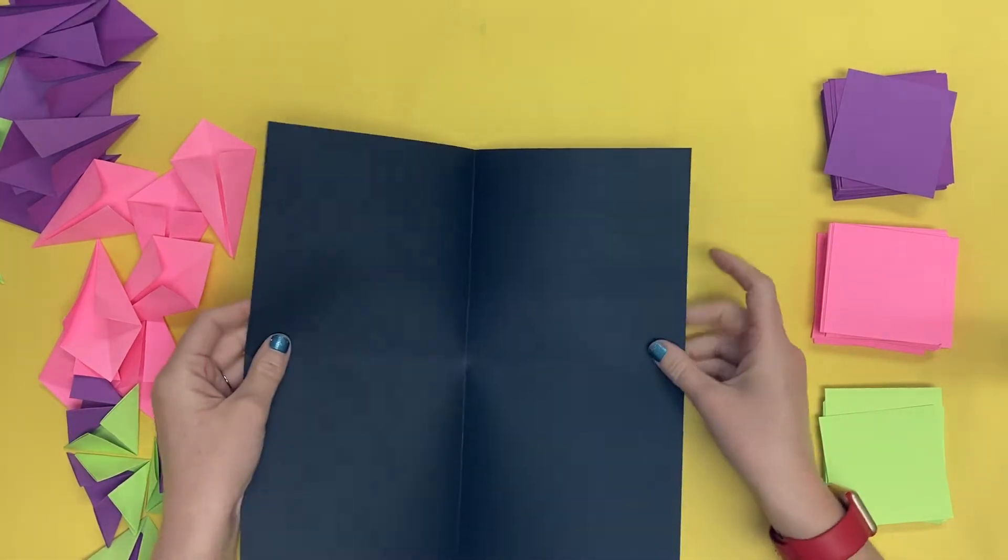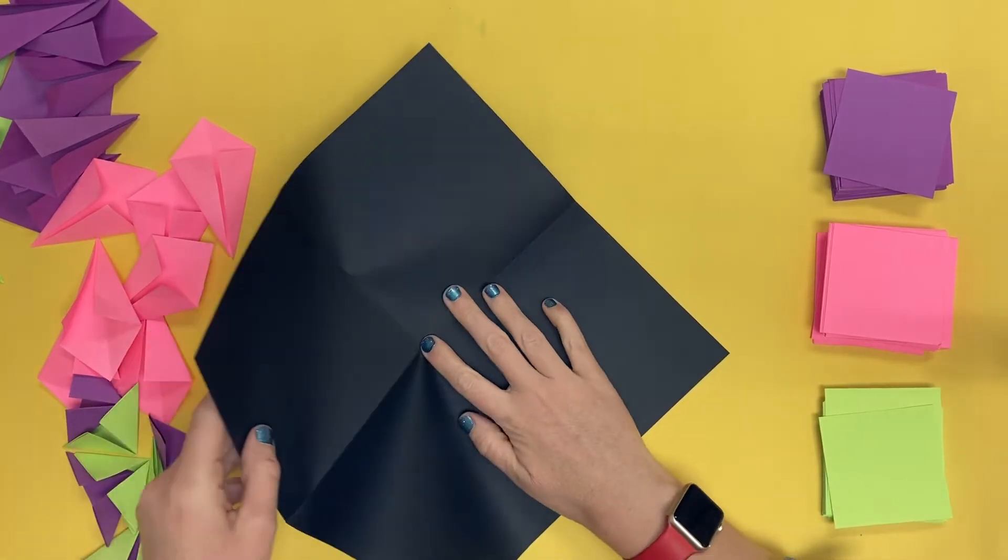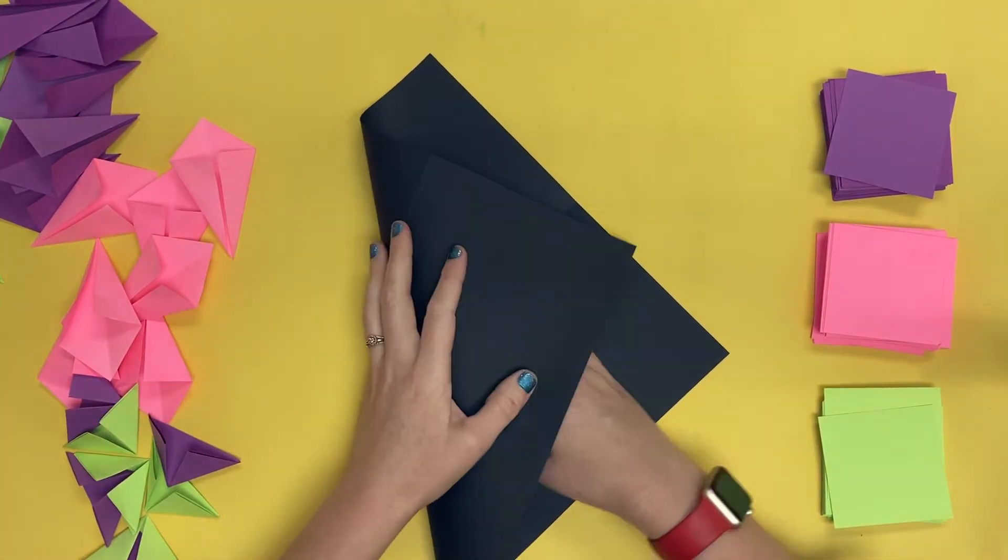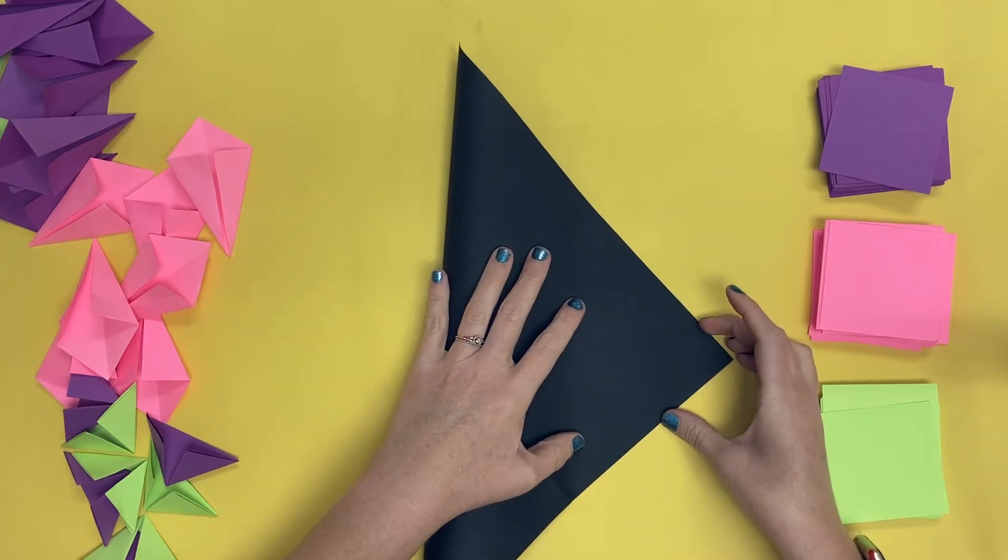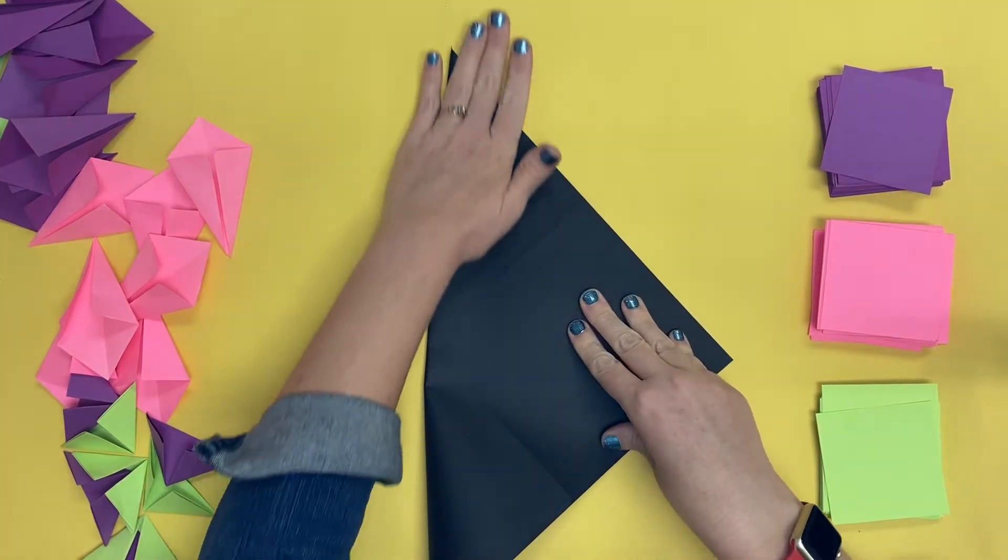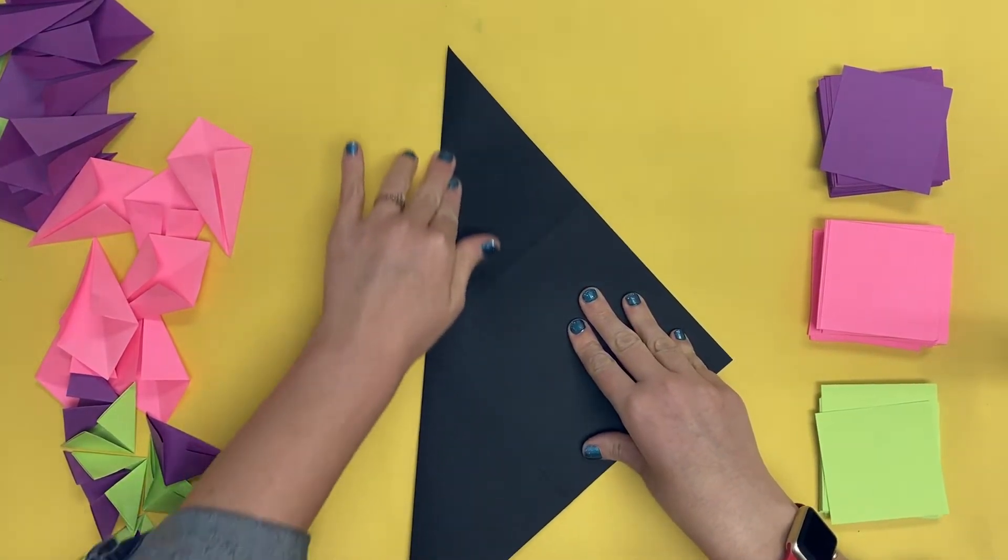Now I'm going to fold my paper at a diagonal from corner to corner so it makes the shape of a triangle. Make sure those corners are touching. Smooth out the paper to create a crease.